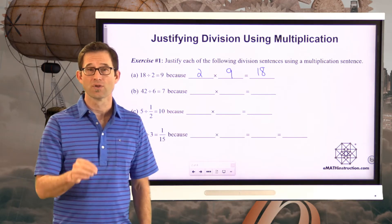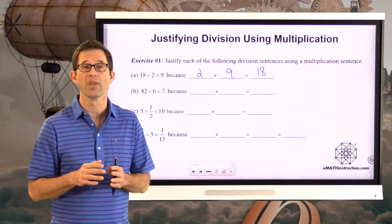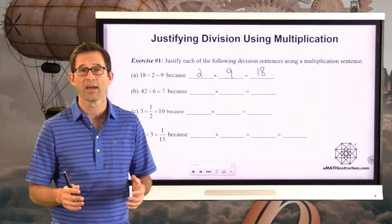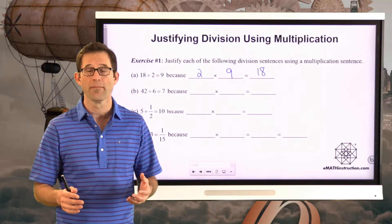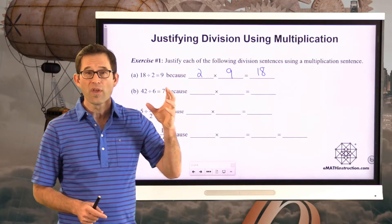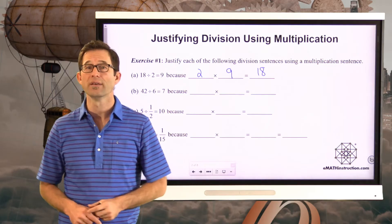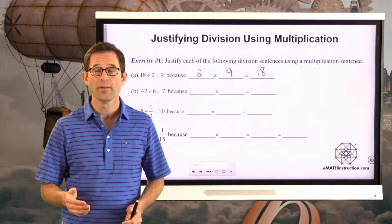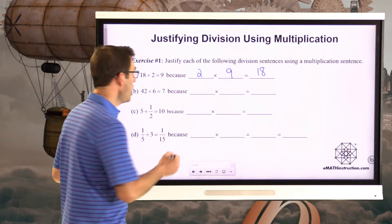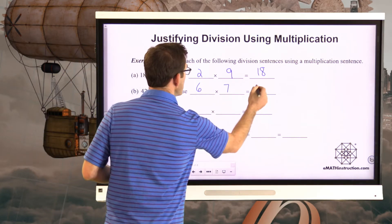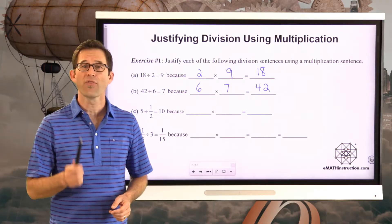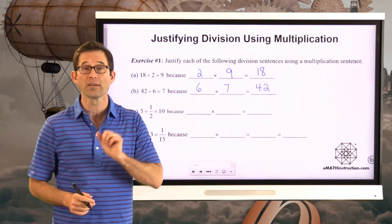When we first think about division, we think about it completely in terms of the inverse of multiplication. You even have things like product pairs to help you think about different division facts. But at the end of the day, when we think about 18 divided by 2 equaling 9, we think about that because 2 times 9 is 18, or 9 times 2 is 18. So 42 divided by 6 is 7 simply because 6 times 7 is 42. Every single division problem can be thought of and checked in terms of multiplication.